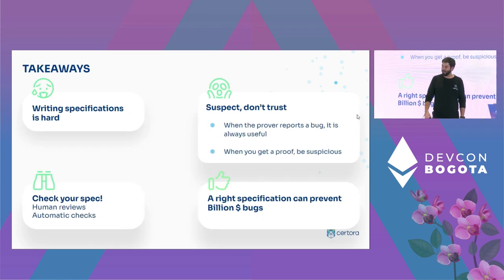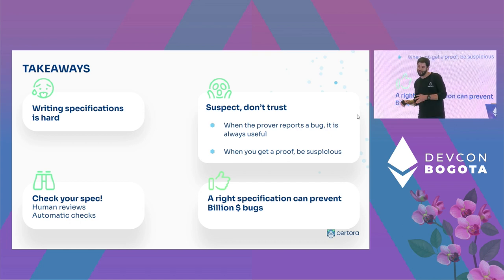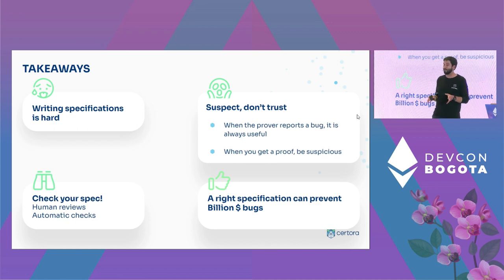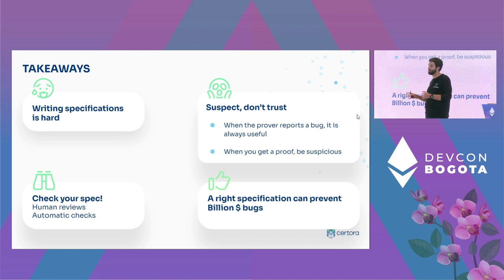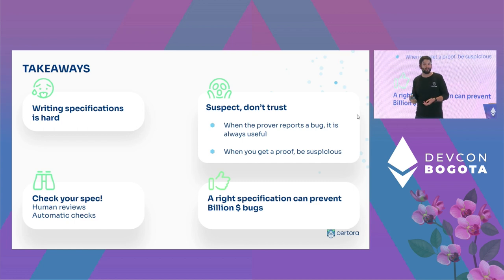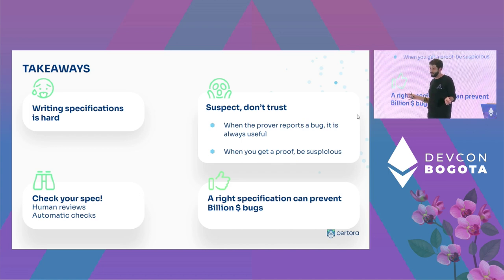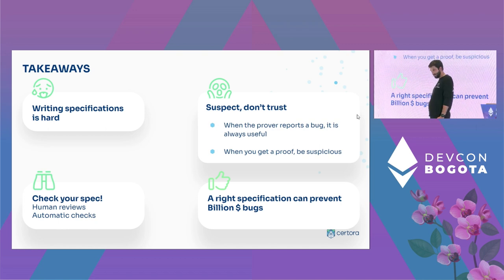To sum it up: specifications are written by humans just like code is, and they're equally or even harder to write. You shouldn't expect your specifications to be perfect. Therefore, always check your spec — have another person or an expert review it, and use automatic checks like those Sertora provides. Always be suspicious of what the tool gives you. When you get a bug it's always a good result because you can verify it, but when you get a proof you don't have a good way to verify it — don't take it blindly. Writing correct specifications can still find bugs worth millions or billions of dollars.